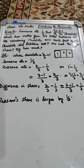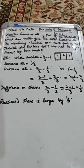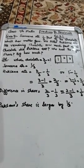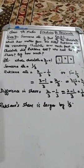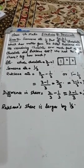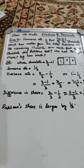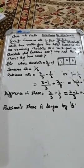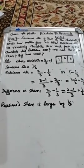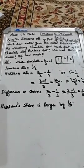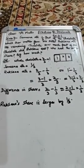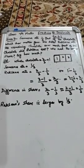Assalamu alaikum. Class 7th maths, fractions and decimals, question number seven. Samina ate one-third part of the chocolate which her mother gave. His sister Rukhsana ate the remaining chocolate. How much part of the chocolate did Rukhsana eat? Who had the larger share, and by how much?